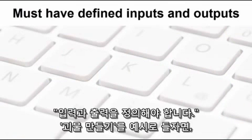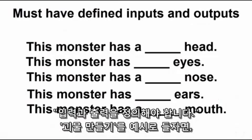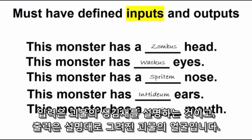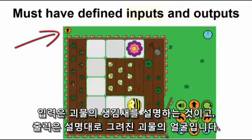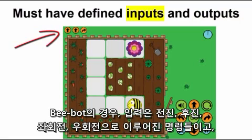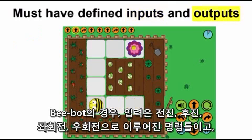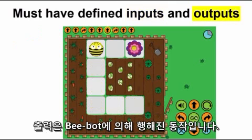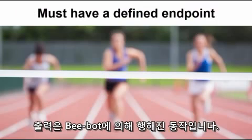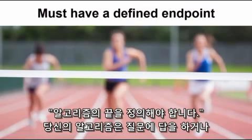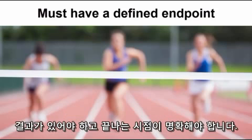You need defined inputs and outputs. The input for the make-a-monster example is one name for each feature; the output of the algorithm is a new monster's face. For BeeBot, it is a series of directional steps using forward, backward, left turn, and right turn; the output is the motion performed by the BeeBot.